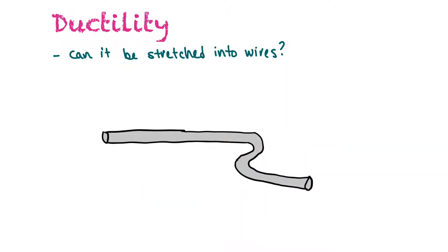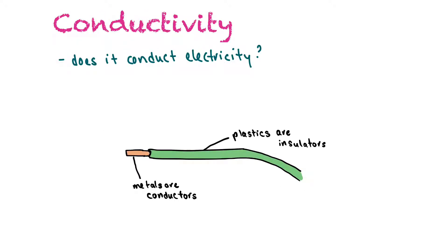Ductility asks whether or not a substance can be stretched into wires. Metals are usually ductile — the electrical wires in your home are made of metal. Conductivity asks whether something conducts electricity. Metals like wire are conductors of electricity, but we don't want the electricity to reach us, so wires are wrapped in plastic. Plastics are insulators — they do not conduct electricity — protecting us from electrocution.